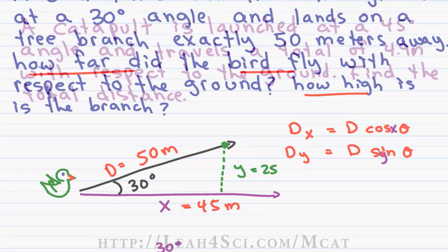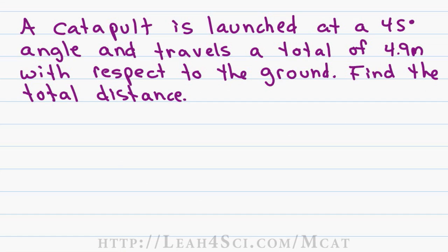You may be faced with a question where you're given the x or the y component and asked to find the resultant or asked to find the hypotenuse or the total distance traveled by this object. For example in this question, we have a catapult is launched at a 45 degree angle and travels a total of 4.9 meters with respect to the ground, find the total distance. For the purpose of this question, we'll assume that the catapult travels in a straight line rather than slowly sloping downward due to the effect of gravity.